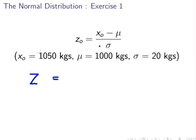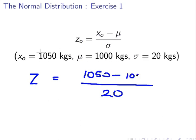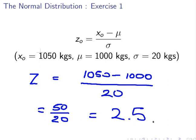Z equals 1050 minus 1000 over 20. That's equal to 50 over 20, and that is equal to 2.5.